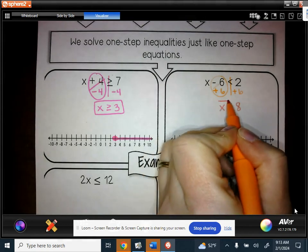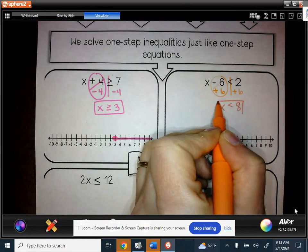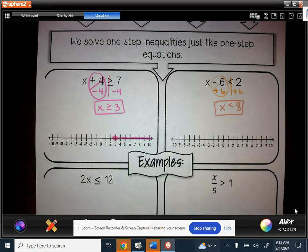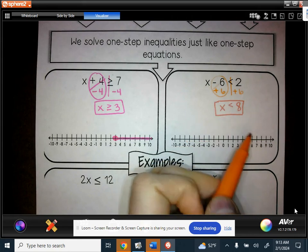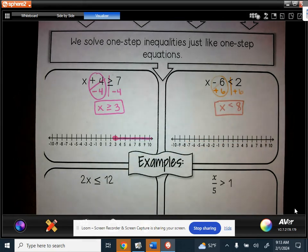We need to pick something less than 8, so we can't pick 8 here because 8 is not less than 8. So I'm going to pick 5. 5 is less than 8. If I did 5 minus 6, that would give me negative 1, and negative 1 is less than 2, so we know that we have the right solution set.